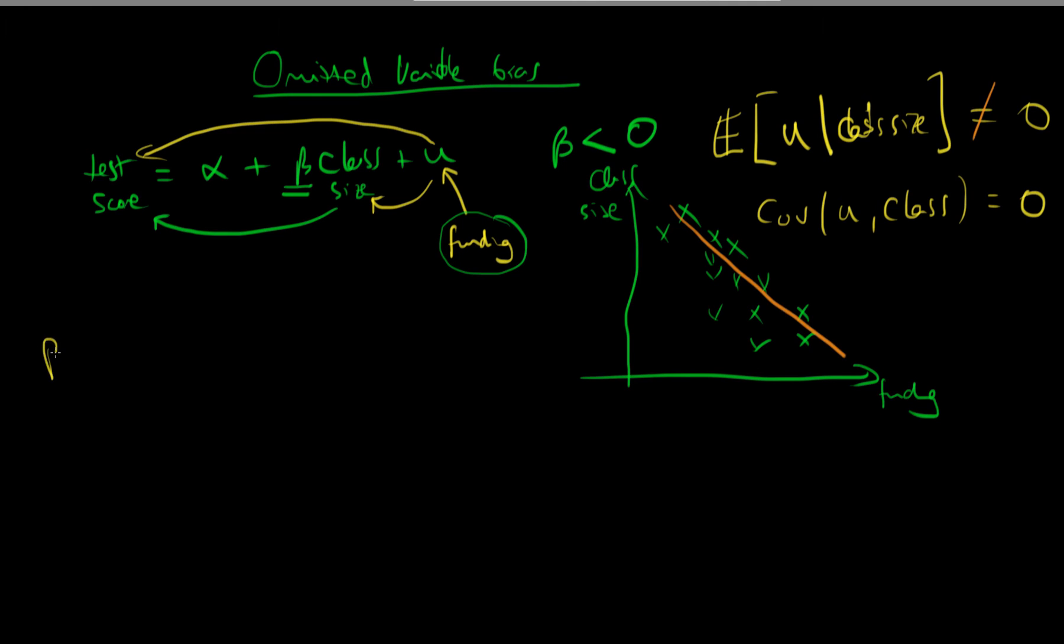So perhaps we use our least squared estimator and it outputs a value of minus 10. Well, what does this mean? It means that for every extra individual who joins the class, individuals in that class on average tend to score 10 points less.